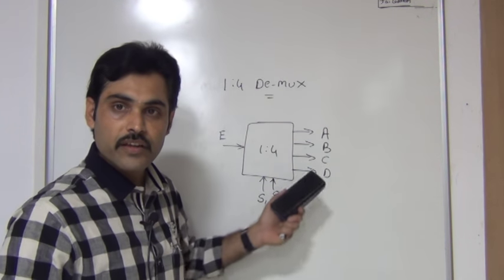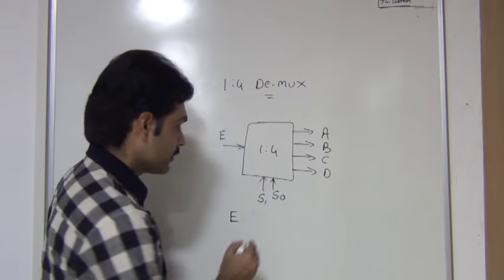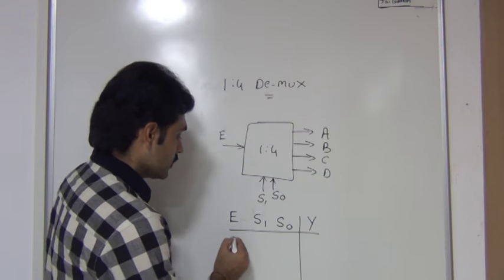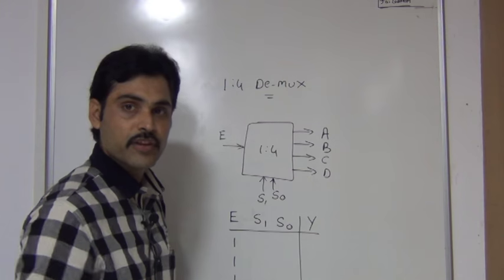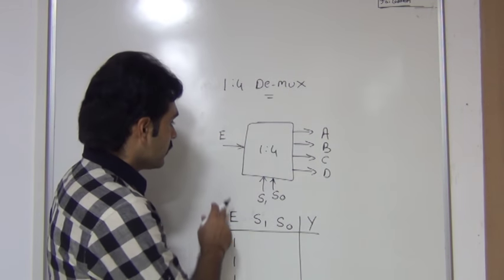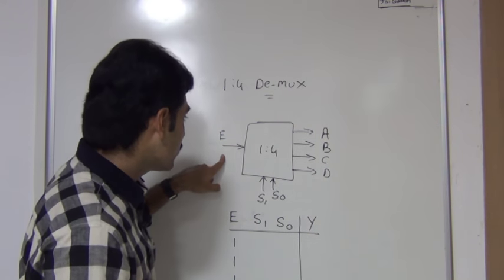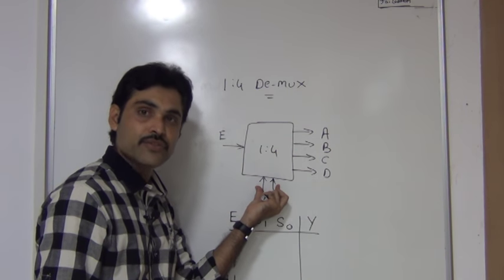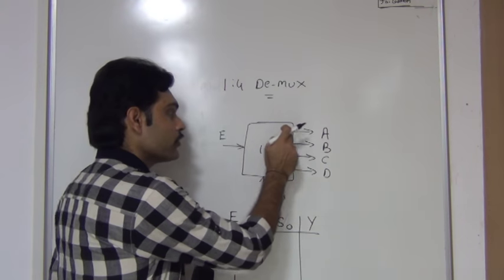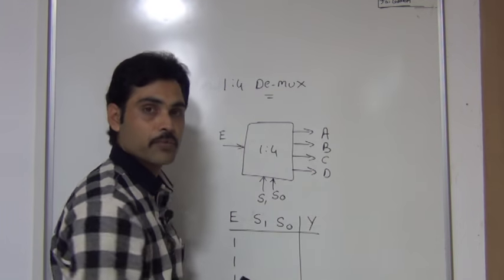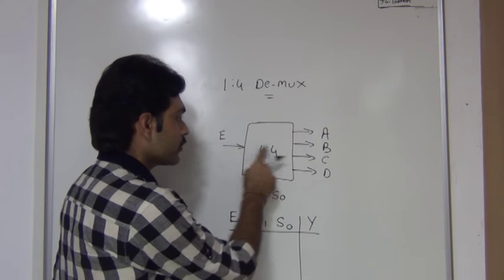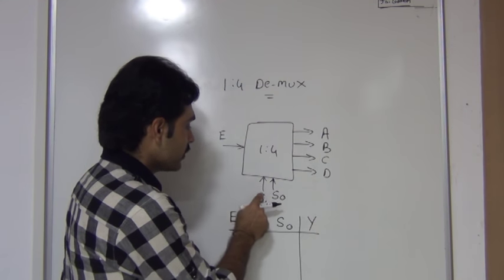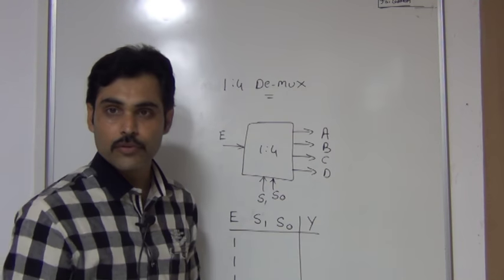This 1-to-4 demultiplexer will work in this way. I will take input E, the selection lines, and the output. I am putting E value as 1 because the input is always on. Whatever input I am giving — if I want to take it from output line A, I have to set the selection lines to 0, 0. If I put 0, 0, this input value will go through output A. If selection lines are 0, 1, you can collect the input at output B. If it is 1, 0, you can collect at output C. And if selection lines are 1, 1, you can collect the input at output D.